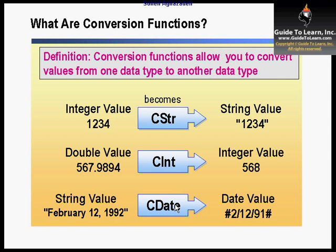Such conversion functions include CDate, CType, CDouble, and CInt. CType is pretty new — it asks you what type you would like to transfer from one type to the other. In other words, you're fairly flexible in regard to conversion between types.